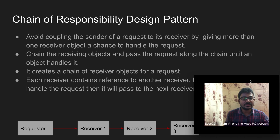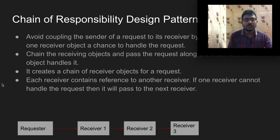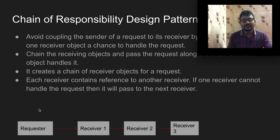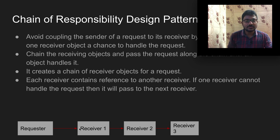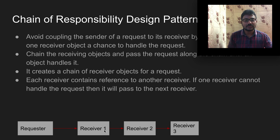Each receiver contains a reference to another receiver. If one receiver cannot handle the request, it passes it to the next server. Receiver one holds a reference to receiver two, and receiver two holds a reference to receiver three, allowing the request to be forwarded along the chain.